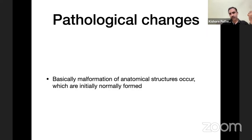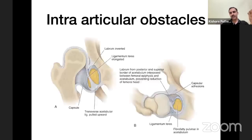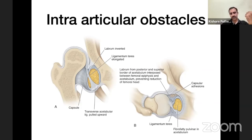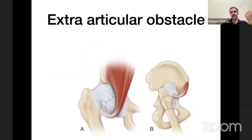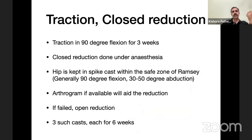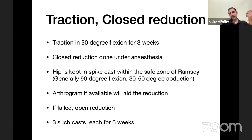Treatment from six months to two years is difficult because of pathological changes. Intra-articular obstacles include pulvinar — a fibrofatty tissue inside the acetabulum — an inverted labrum, elongated ligamentum teres, and an upwardly pulled transverse acetabular ligament. The main extra-articular obstacle is the iliopsoas. Treatment is traction for three weeks followed by closed reduction; the hip is then maintained in a hip spica cast within the safe zone of Ramsey. Arthrogram aids reduction. If closed reduction fails, open reduction is performed; three casts are given, each for six weeks.